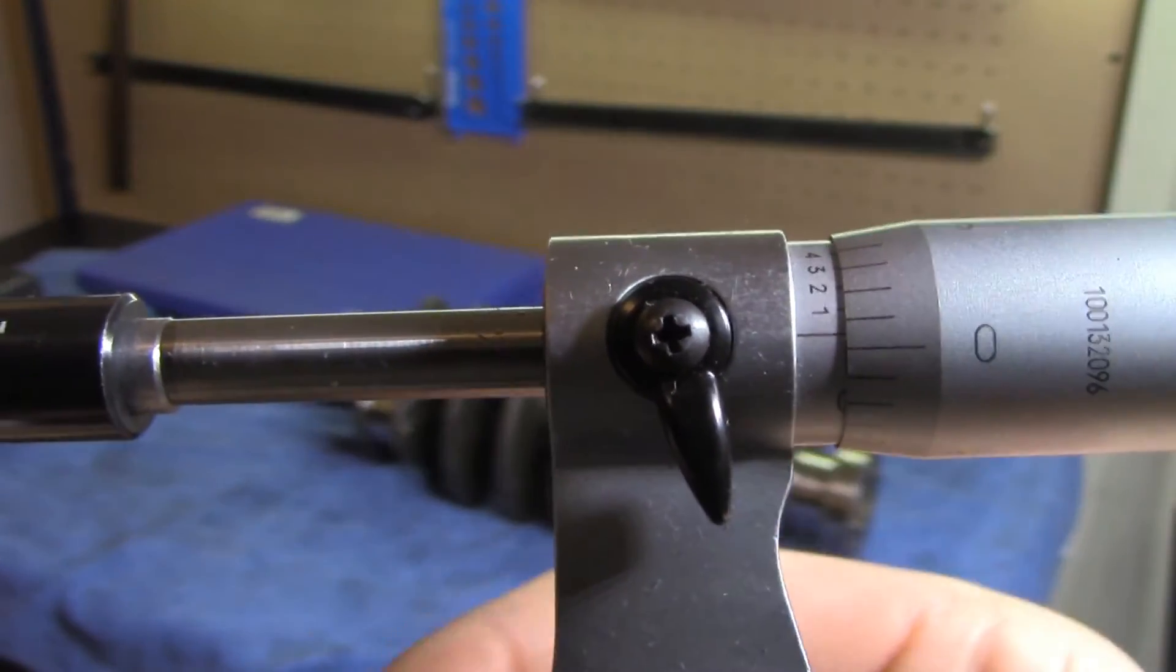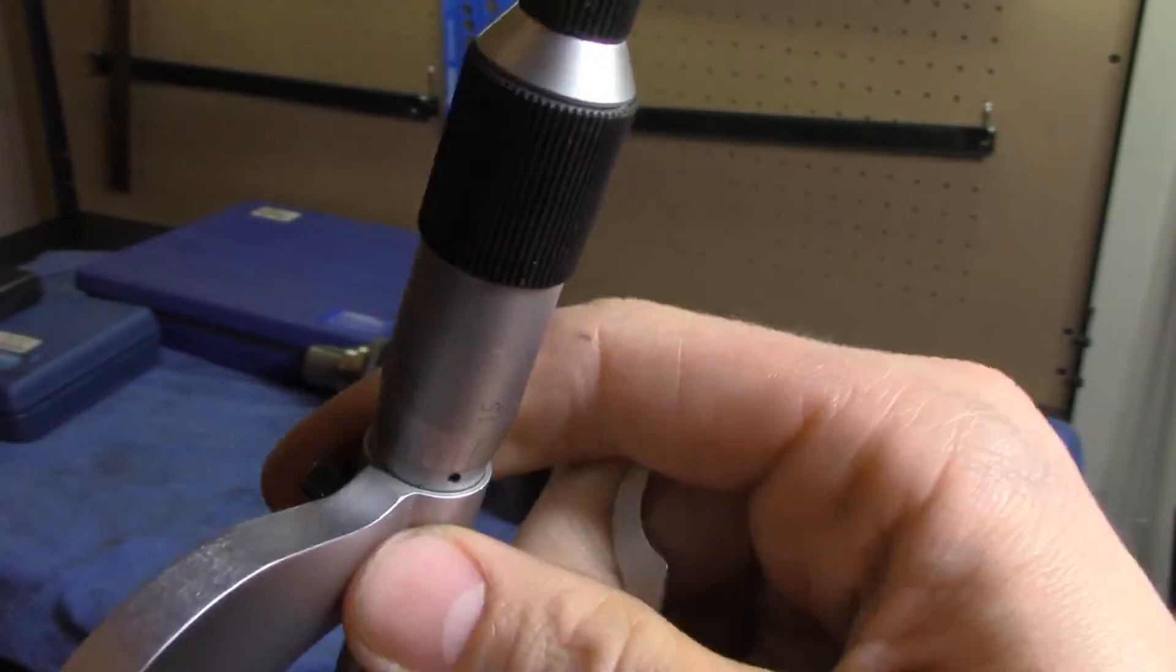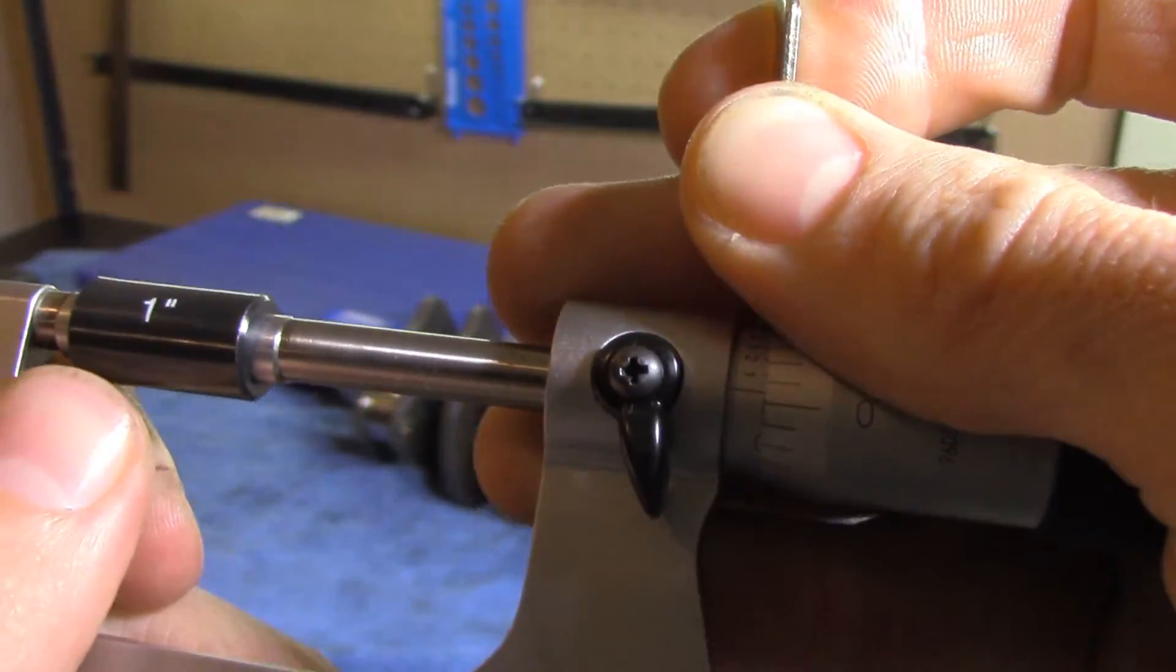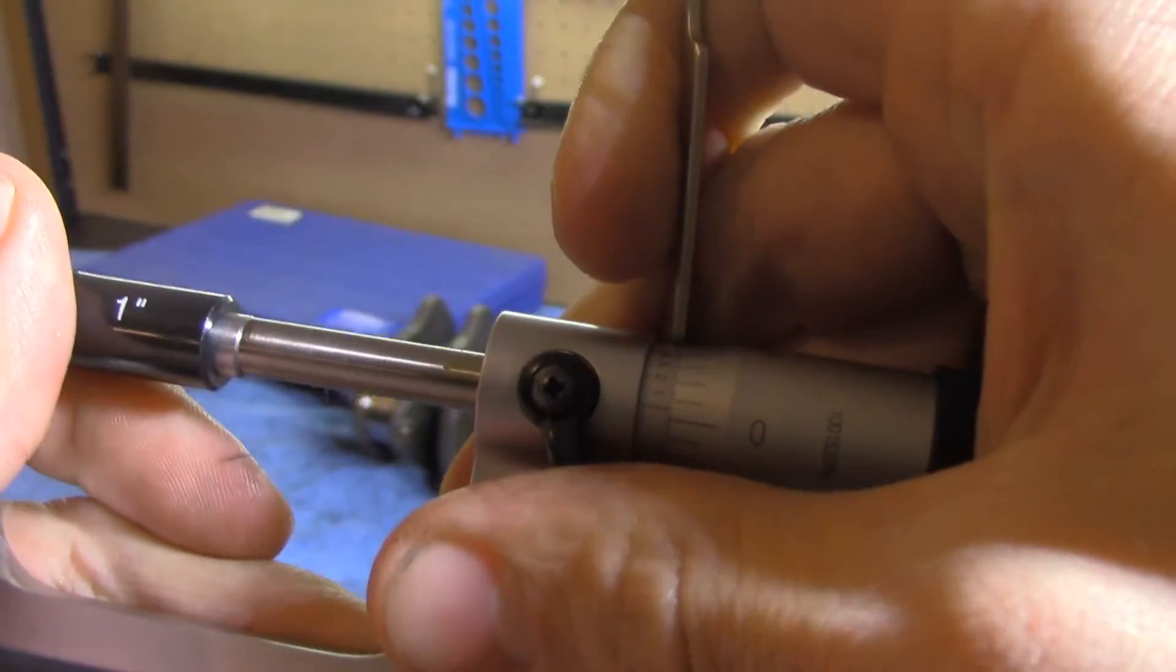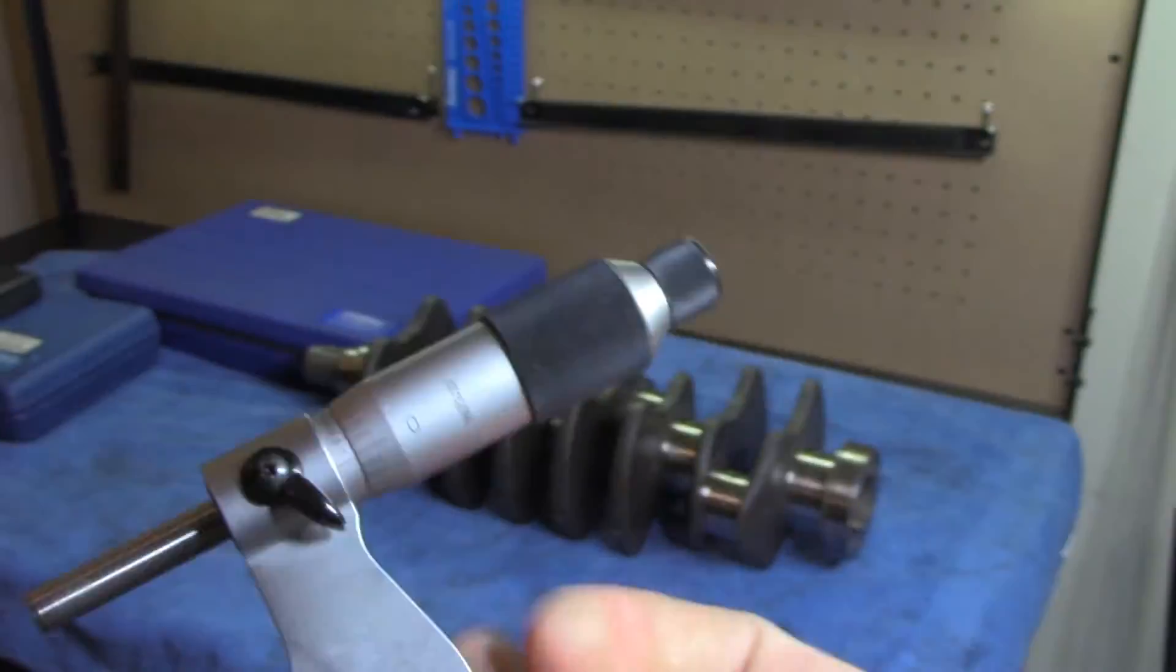My one to two inch micrometer is off by half a thousandths or so. Fowler's adjustment instructions state that we would turn the barrel using the supplied tool to correct the reading. Sorry for this awkward angle, but you should never drop the standards, so I'm trying to give you the best angle while ensuring the safety of my tools.